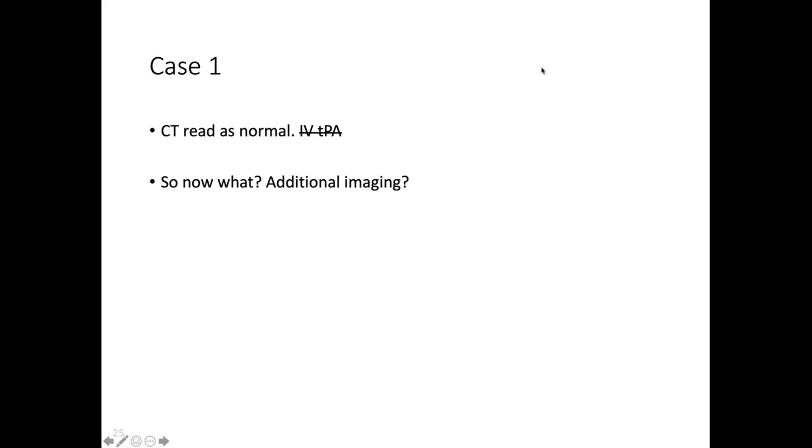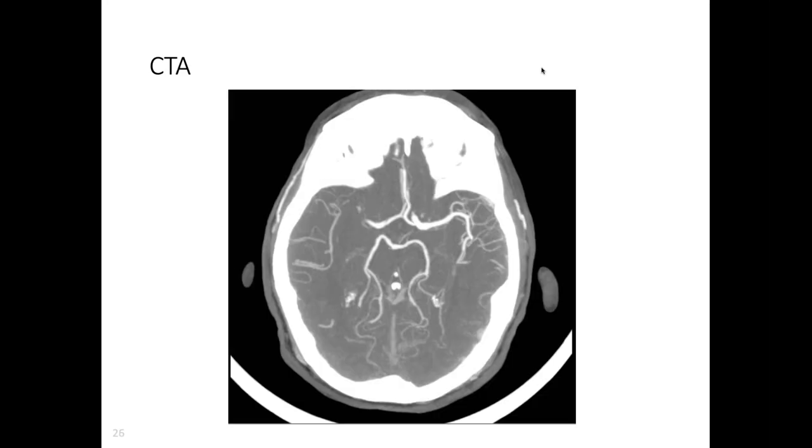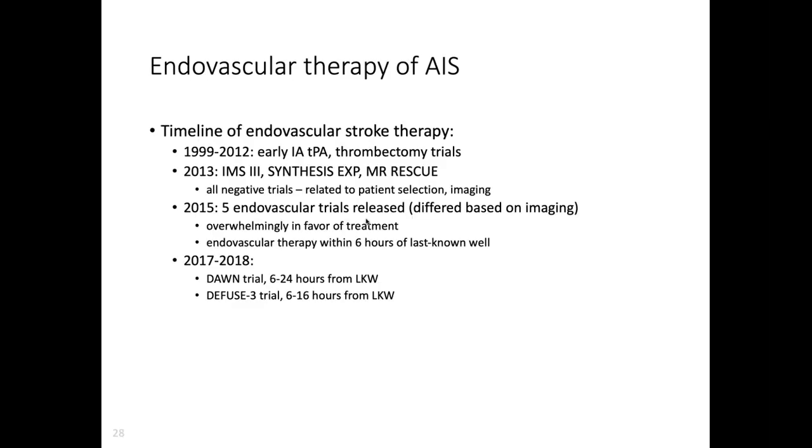Unfortunately for this patient, can't give tPA because of the last known well. So what else might we do? How about a CTA? He had a pretty classic right MCA syndrome with cortical manifestations - neglect, gaze deviation, and sure enough on this CTA right here, you see the right MCA is occluded. Let's talk about endovascular therapy of acute stroke. When I was in med school, I graduated in 2010, this was still relatively new. We were doing a lot of intra-arterial TPA and early thrombectomy. The International Stroke Conference in 2013 had three big trials released - IMS3, Synthesis Expansion, MRSC - that looked at thrombectomy for stroke patients. To everybody's shock and disappointment, these three trials were negative.